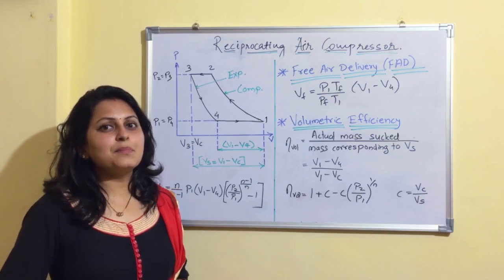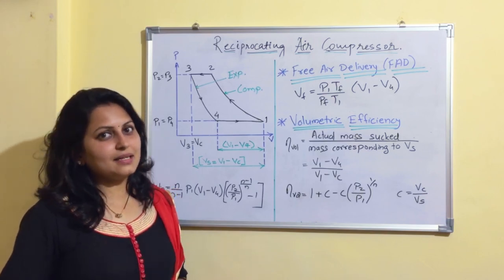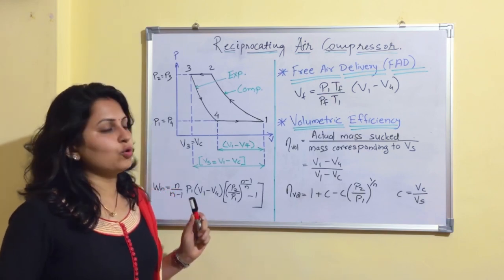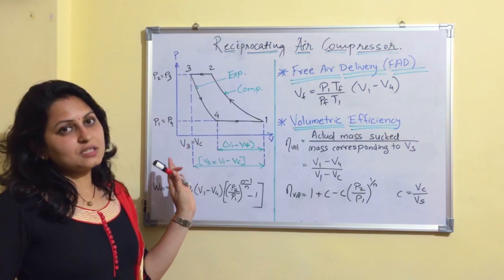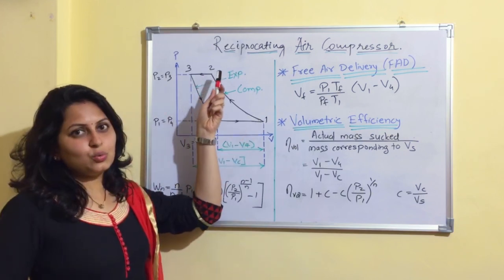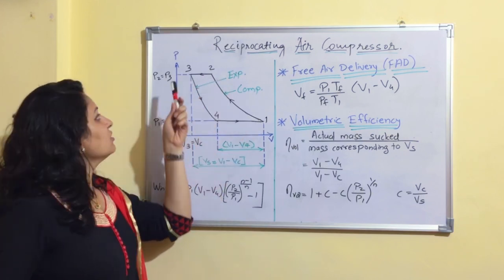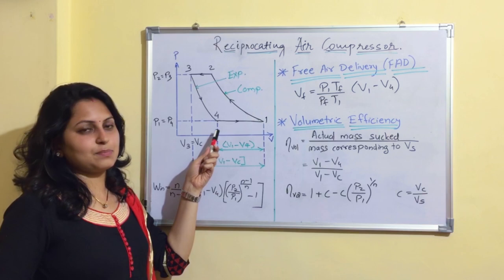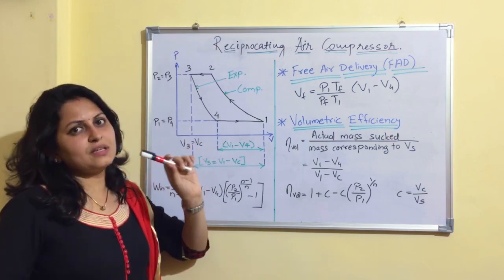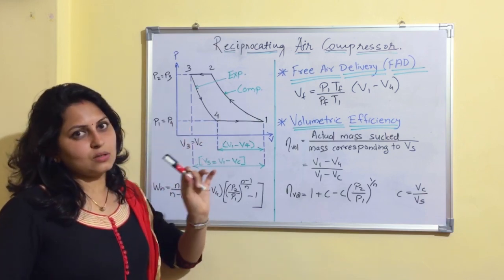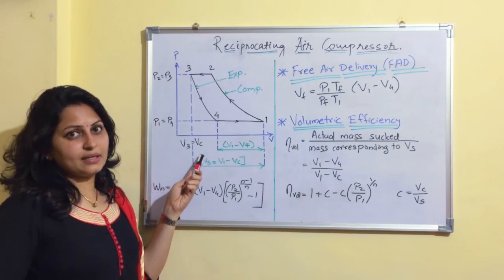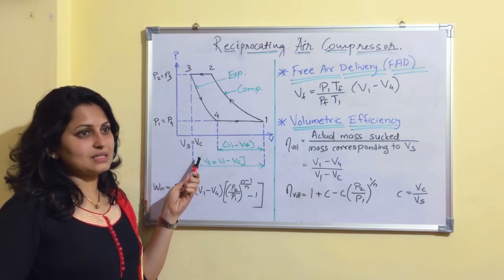Till now we have seen the concept by neglecting clearance volume. Now we will consider clearance volume. In this PV diagram, process 1 to 2 is compression and process 3 to 4 is expansion. Both processes follow the same law PV^n = constant. V3 is equal to clearance volume Vc.